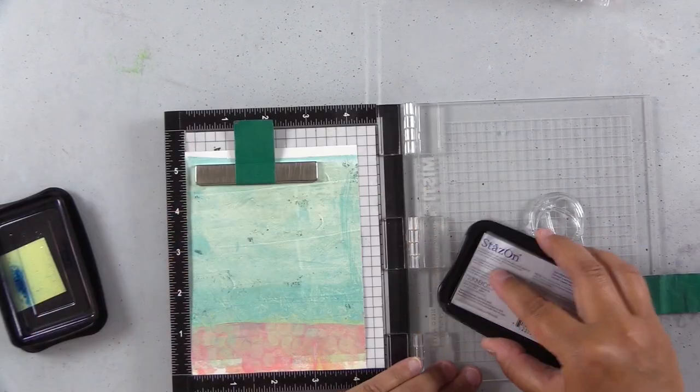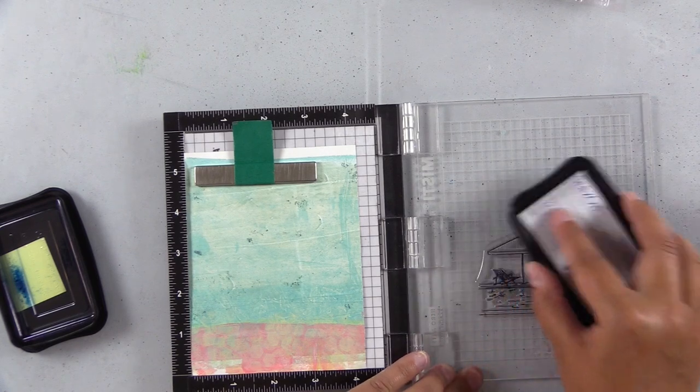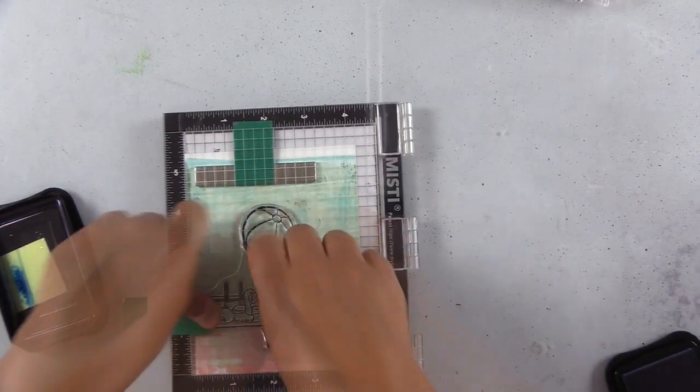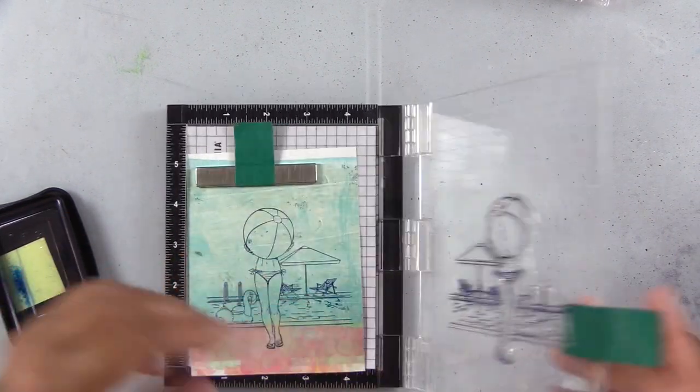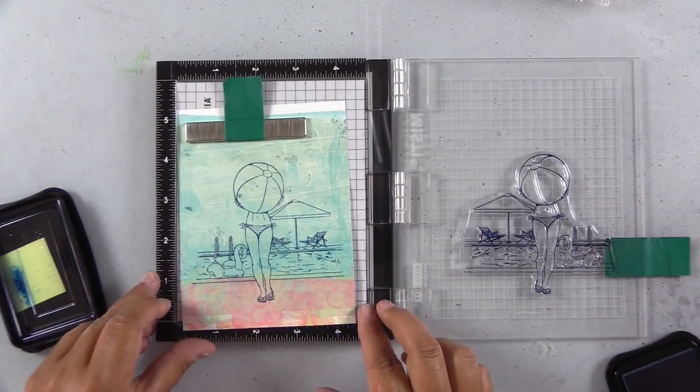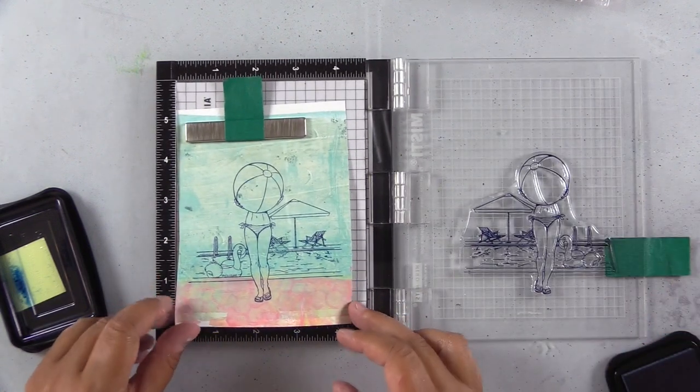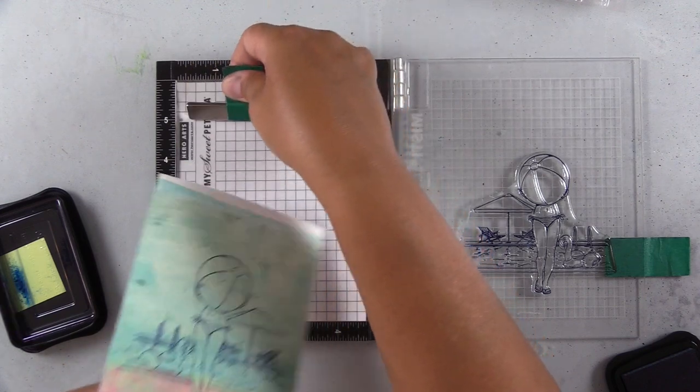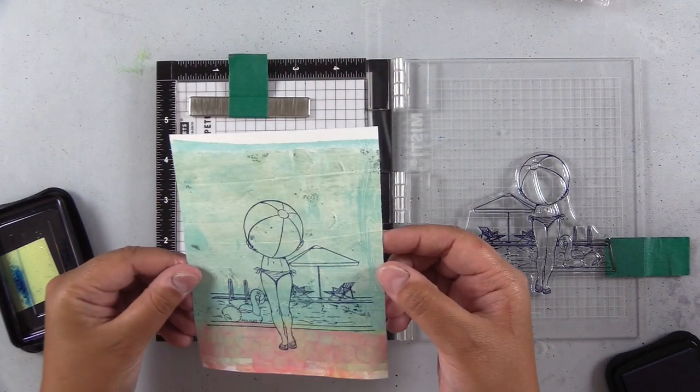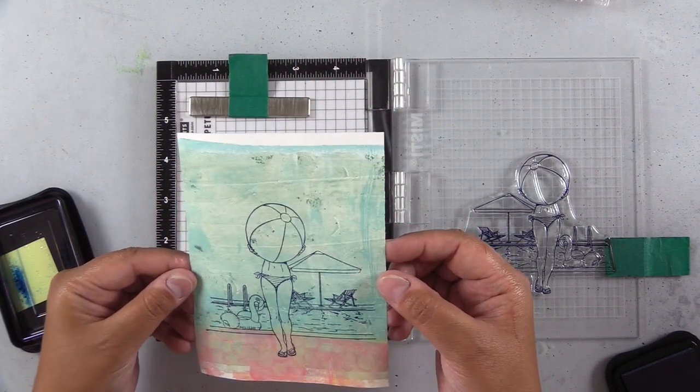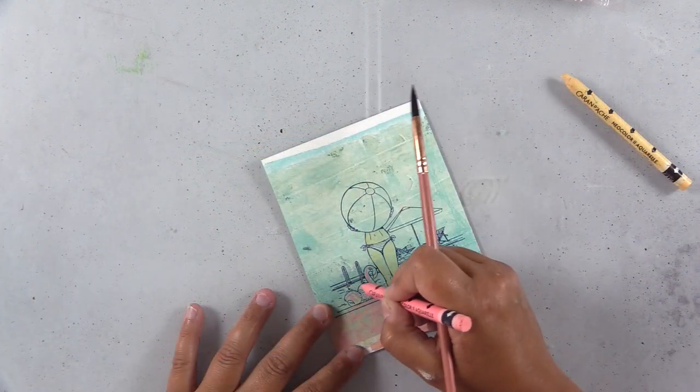So I'm just double checking again my placement, and I'll stamp the image with Stazon Midnight Blue ink. This is a solvent ink that's good for non-porous surfaces, so it's perfect on top of acrylic paints. It dries super fast, so there's little to no chance of it smearing. I'm contemplating whether to just leave it like this, or actually to fill in some of these areas and paint it.